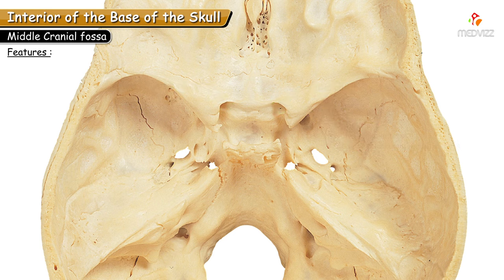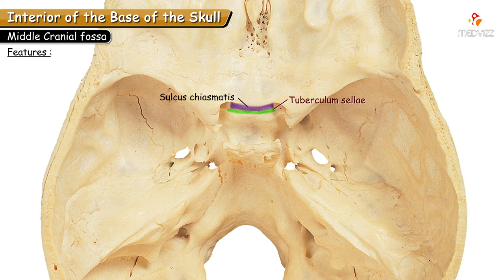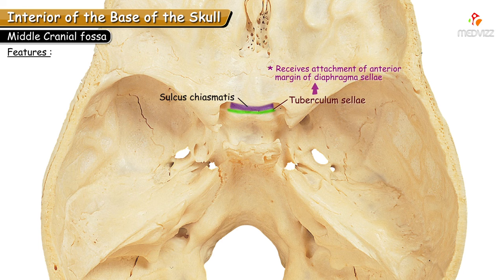The next feature of the body of the sphenoid is the tuberculum sellae, which is an elevation just behind the sulcus chiasmaticus, limiting it posteriorly. It gives attachment to a fold of dura mater. On each side of the tuberculum sellae, the small projections are the middle clinoid processes. The tuberculum sellae provides the anterior attachment of the diaphragma sellae.